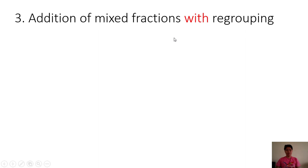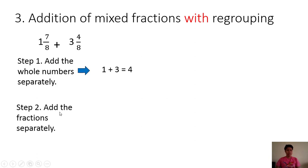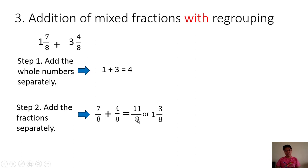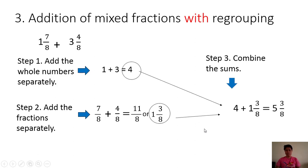Example number 3: addition of mixed fractions with regrouping. 1 and 7/8 plus 3 and 4/8. Step 1: add the whole numbers separately — 1 plus 3 is equal to 4. Step 2: add the fractions separately — 7/8 plus 4/8 gives us 11/8, which is an improper fraction. We change this into a mixed number by dividing: 11 divided by 8 is 1 remainder 3, so it is 1 and 3/8. Step 3: combine the sums — 4 plus 1 and 3/8 gives 5 and 3/8. Therefore, 1 and 7/8 plus 3 and 4/8 is equal to 5 and 3/8.